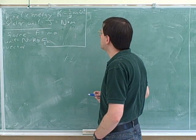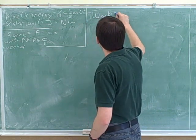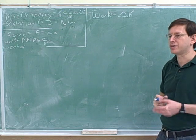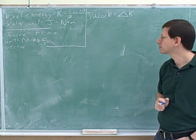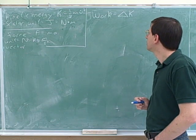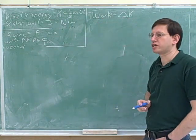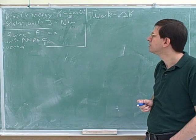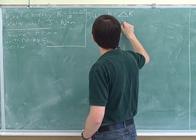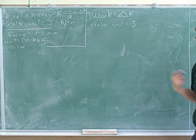Now we want to introduce the concept of work. The key to work is that work tells you how the kinetic energy is going to change. Based on this equation, would work be a vector or a scalar? Because it's based on kinetic energy. And what would be the units for work? Because the units on the left have to balance the units on the right, so we use joules for both energy and for work.